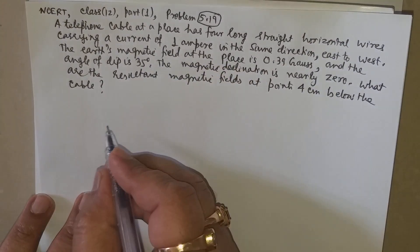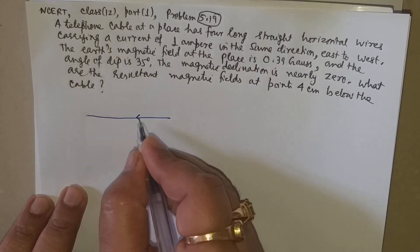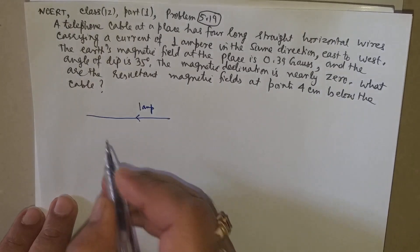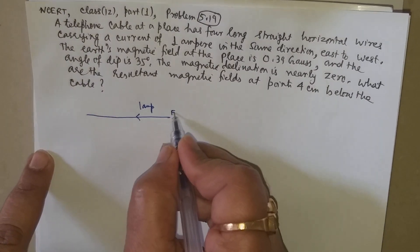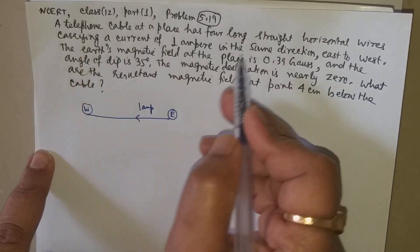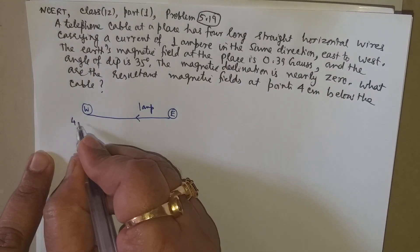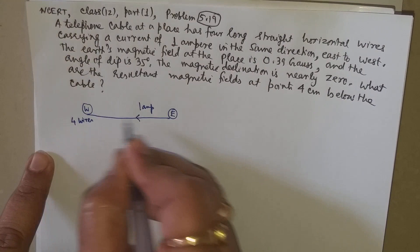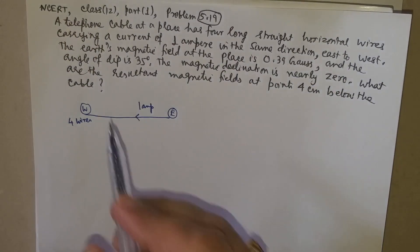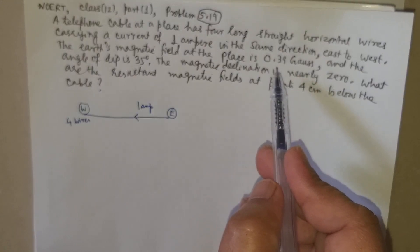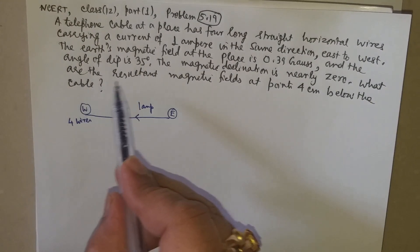Here the question is given that there is a wire which carries one ampere of current. In fact, there are four wires carrying current from east to west. The earth's magnetic field at the place is 0.39 Gauss, and the angle of dip is 35 degrees.